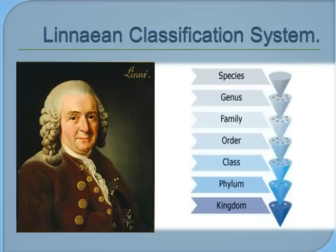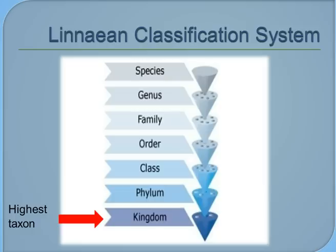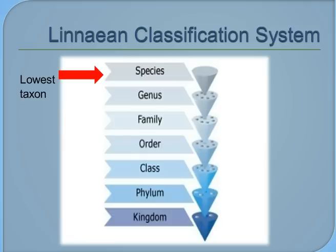One type is the Linnean classification system. This is one of the oldest classifying methods that is still used today. It organizes different organisms based on similarities and differences. It consists of seven taxons, which are: kingdom, which is the highest taxon; phylum; class; order; family; genus; and species, which is the lowest taxon.